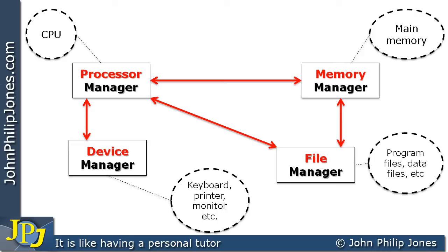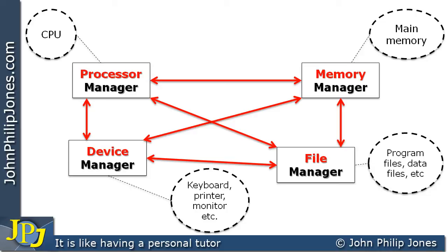Cooperation between the memory manager and the device manager is also essential. For example, if a user plugs in an external USB drive containing data, that data needs to be transferred to memory so the processor can work with it. The device manager would have to work with the file manager to assist this. The processor says it needs data, the memory manager says it doesn't have it, the device manager identifies it on the external device, and the file manager retrieves it and places it in the appropriate location in memory.